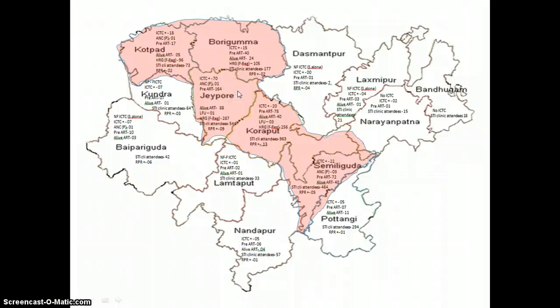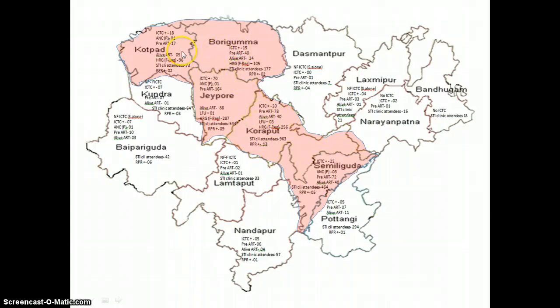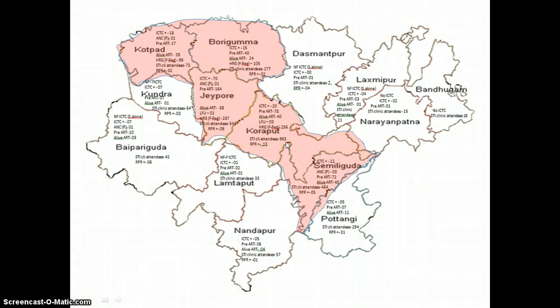We have ICTCs all across these TI intervention blocks. In Koraput, we also have an ART center, a CCC, and a blood bank. Most facilities are available. In this belt, we also have three TI static clinics for STI services catering specifically to HRGs. Looking at all this data, we are now trying to see what possible actions or interventions can be done in this district to further improve the program's impact.